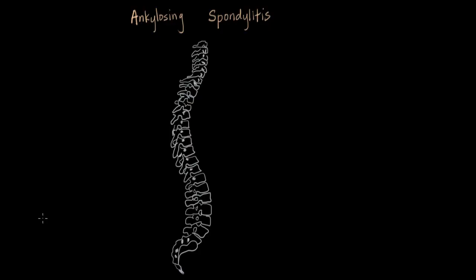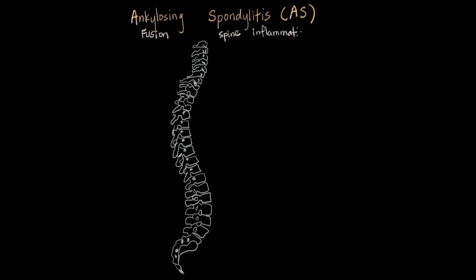We're going to refer to ankylosing spondylitis as AS. If we go word by word just once, you'll see that ankylosing means fusion — it describes the spine being fused together. Spondy, the first part of the word, refers to the spine. And then itis, anywhere, is inflammation. So this is an inflammation of the spine and of the sacroiliac joint, actually.